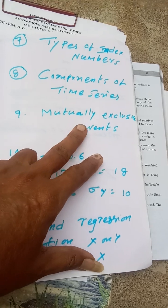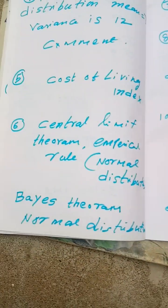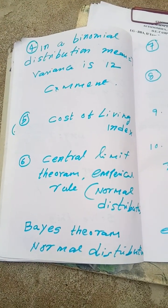And mutually exclusive, dependent and independent events. What is the event. Write about Bayes theorem, Bayes theorem.